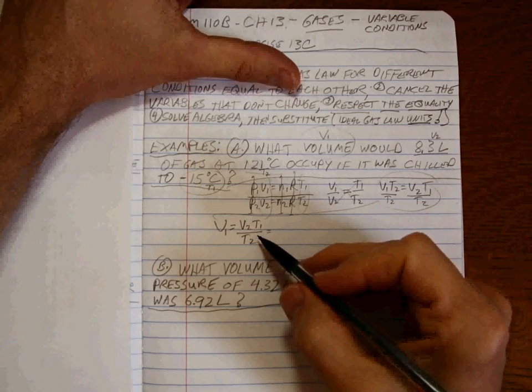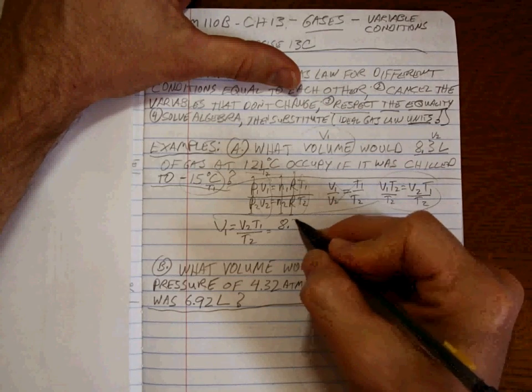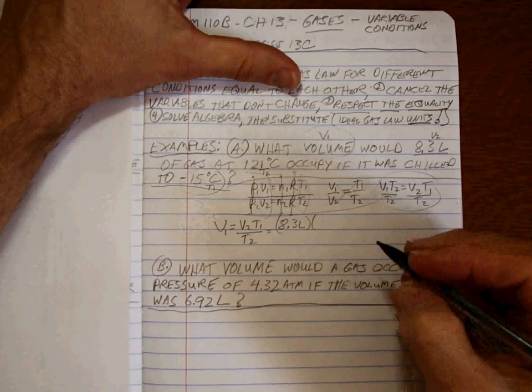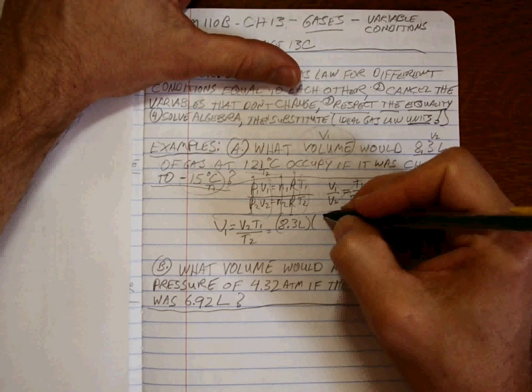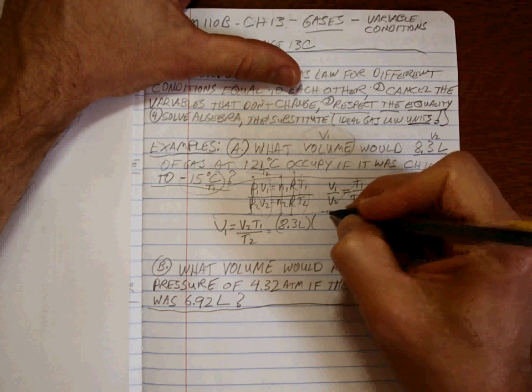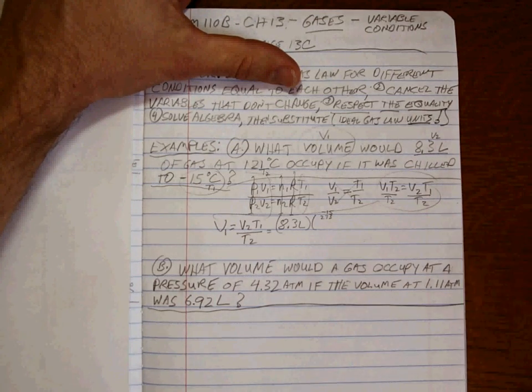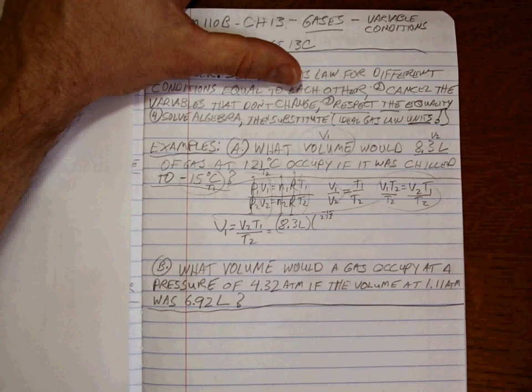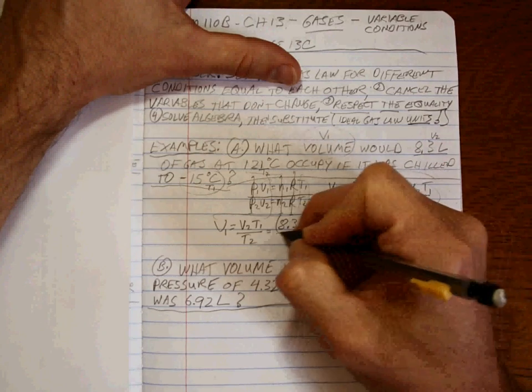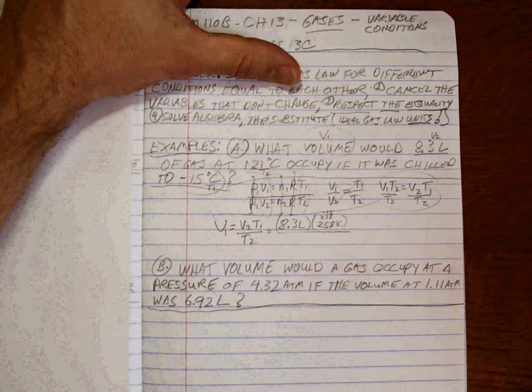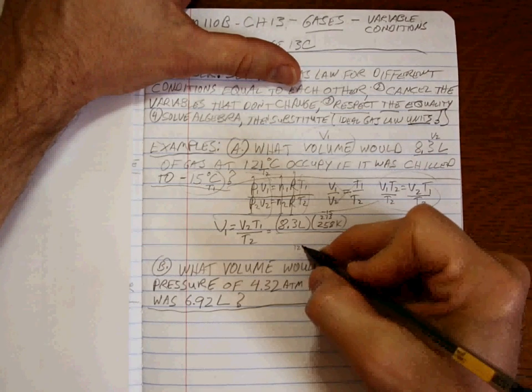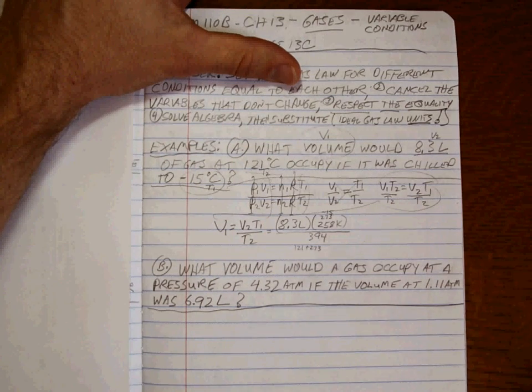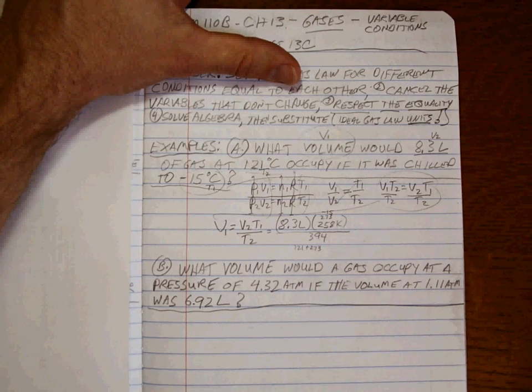The volume 2 was 8.3 liters. T1 is right over here. Negative 15 degrees Celsius. You have to convert to Kelvin. So what is negative 15 plus 273? I use a calculator because I can't do it without messing it up. My calculator doesn't mess it up. And it's 258 Kelvin to three sig figs. And then what do we have at the bottom? T2, which is 121 plus 273, which adds up to 394, right? Make sure 273 plus 121, 394. Okay.